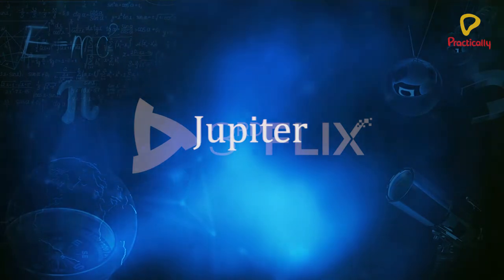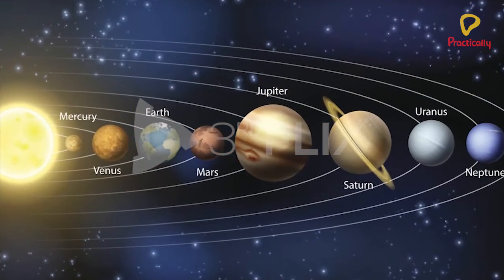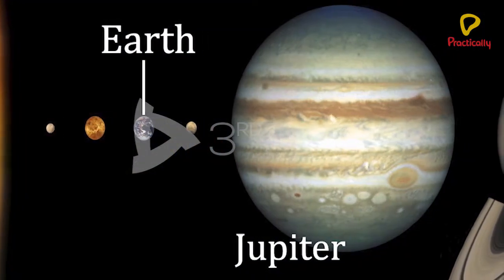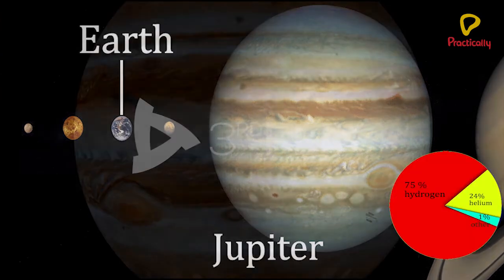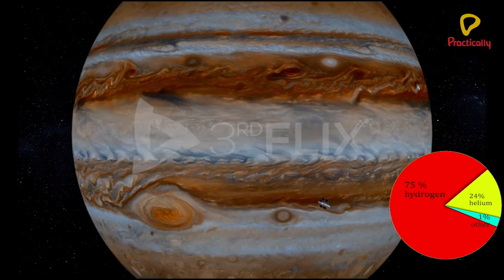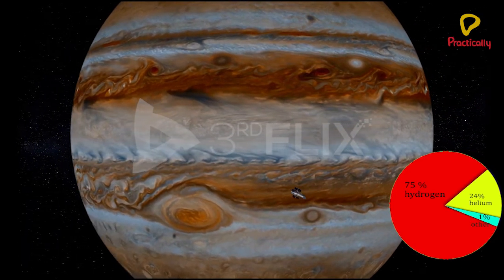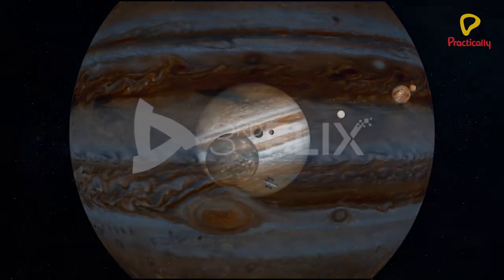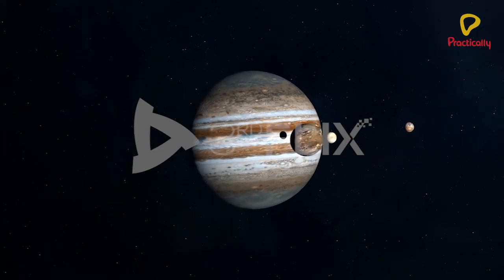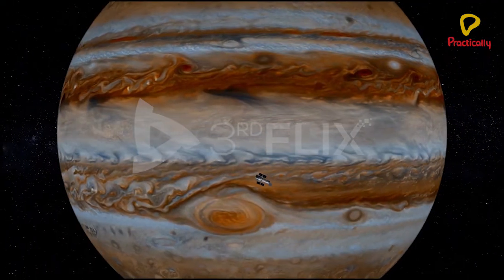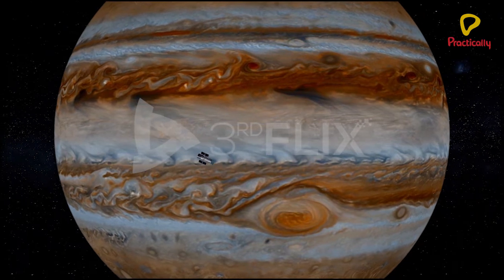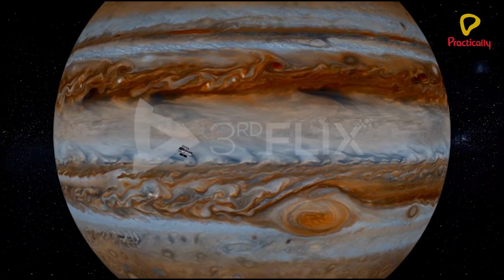Jupiter. Jupiter is the largest planet of our solar system. It is a giant planet with a mass 318 times that of the Earth, and consists of 75% hydrogen, 24% helium, and 1% of other gases like ammonia, methane and water. Jupiter has 79 moons. It has faint rings in its atmosphere with white, yellow, brown and red rings. Unlike other planets, Jupiter has no solid surface.